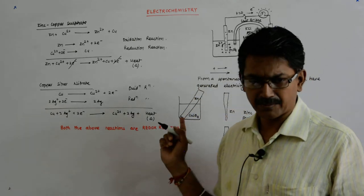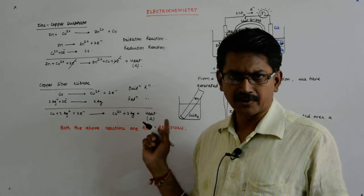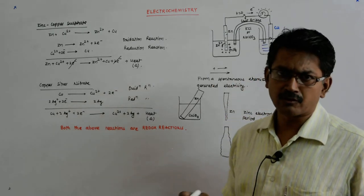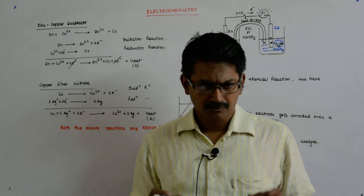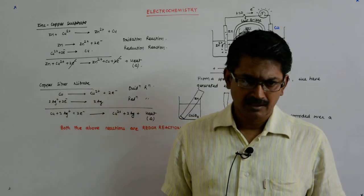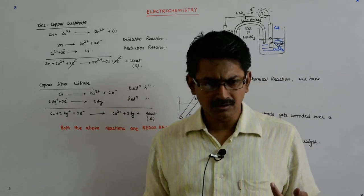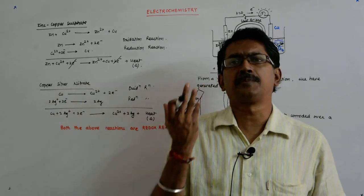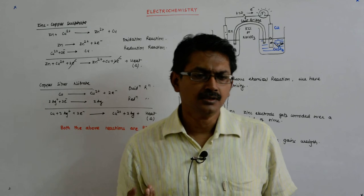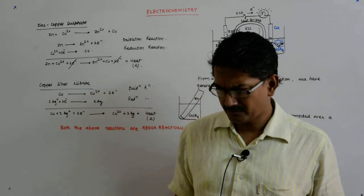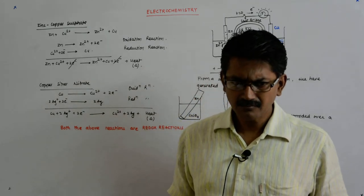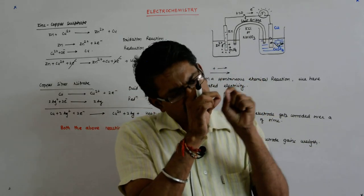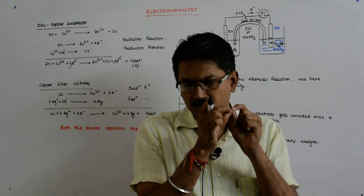We had seen that the copper sulfate was becoming fainter. So zinc was actually forcefully transferring the electrons and jumping into the solution, and it was forcing copper to accept those electrons and move out of the solution. And in that transfer, the heat was getting generated, but you were not getting a way to tap the electricity.